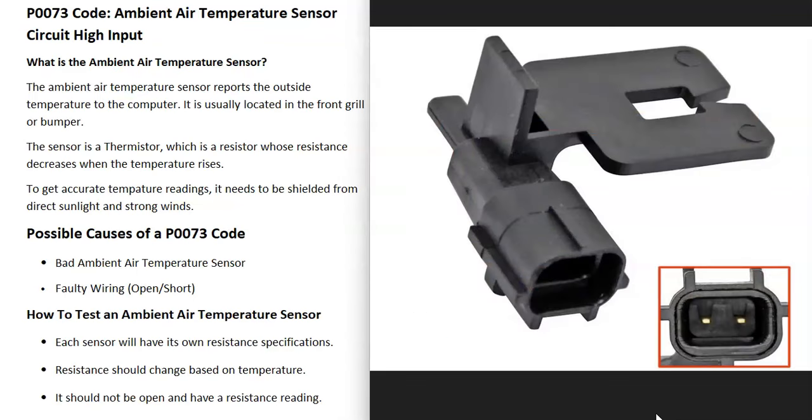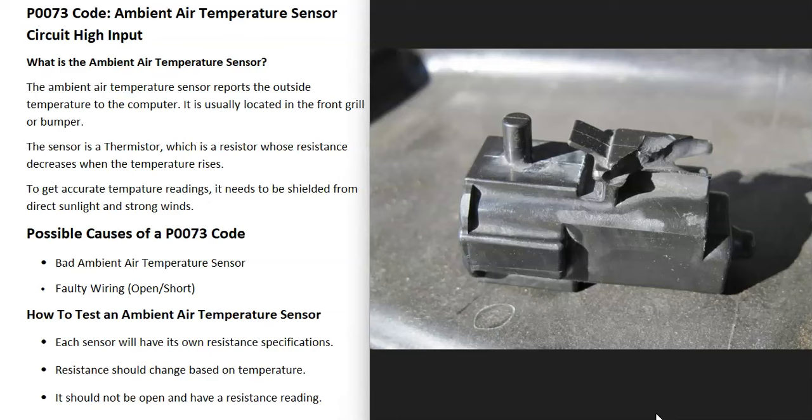There's a temperature sensor that's usually located up inside of the front grill, and it's basically just reporting back to the computer what the outside temperature is. This sensor is what's called a thermistor, which is a resistor whose resistance changes with the temperature.